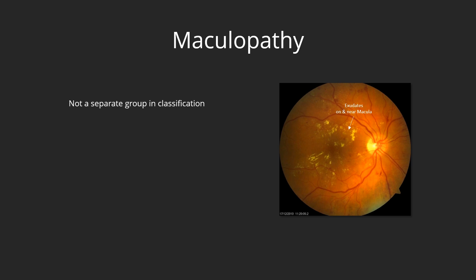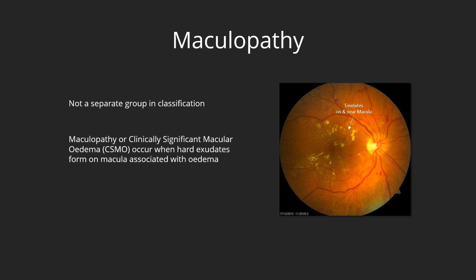Maculopathy. It is not a separate stage or classification, and can occur at any stage of diabetic retinopathy. Maculopathy, or clinically significant macular edema, occurs when there is increased vascular permeability and resultant deposition of hard exudates in the central retina, with associated edema. CSMO is the most common cause of loss of vision in people with diabetes.